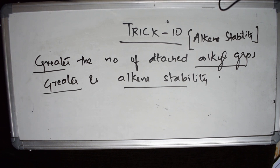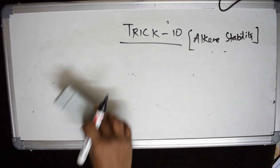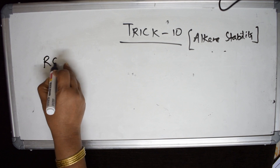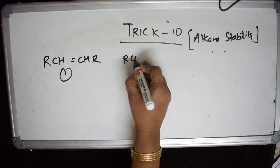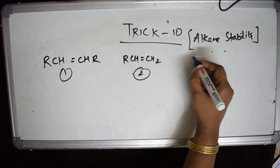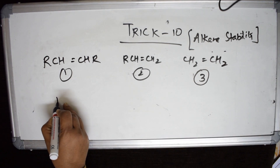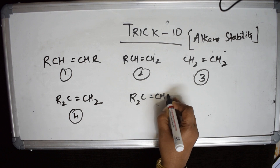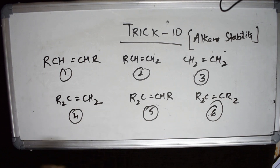Let me take an example. Suppose they give you these examples in the exam: (1) R-CH=CH-R, (2) R-CH=CH₂, (3) CH₂=CH₂, (4) R₂C=CH₂, (5) R₂C=CH₂ (another variant), and (6) R₂C=CR₂. The question asks you to write the correct order of stability.